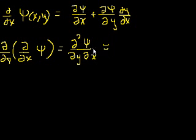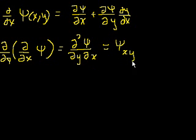This can also be written in my preferred notation, which doesn't have all the extra clutter. You could just say we took the partial with respect to x first — so this means the partial of xi with respect to x — and then we took the partial with respect to y. When you take the partial with respect to x, you hold y constant, and then you hold x constant and take the partial with respect to y.